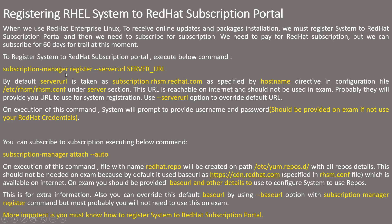To register a system to the Red Hat subscription portal, execute the below command: subscription-manager register. Use the --server-url option to provide the hostname for the server you need to authenticate with. Normally they should provide you a server hostname. By default, the server URL is taken as subscription.rhsm.redhat.com, as specified by the hostname directive in the config file rhsm.conf, under the server section. I will show you the contents of this file when we move to the system.